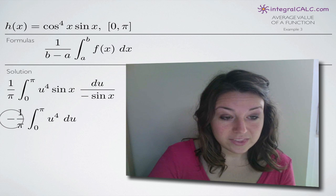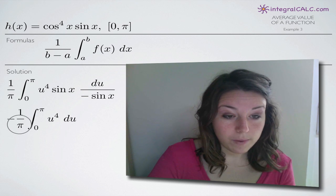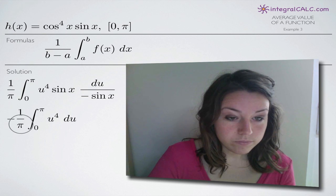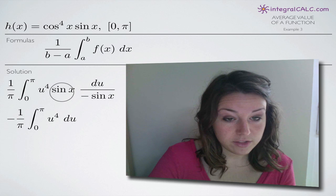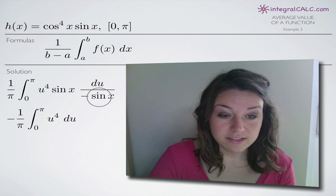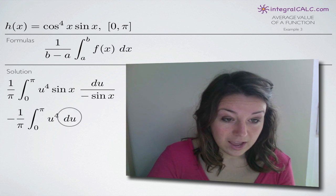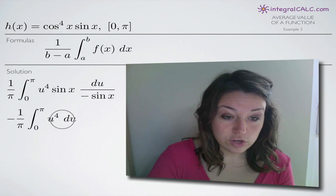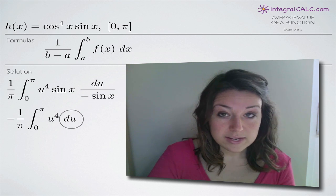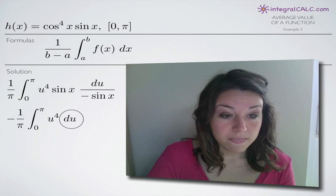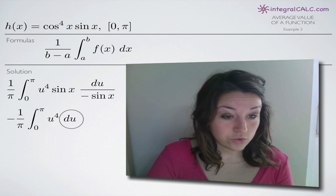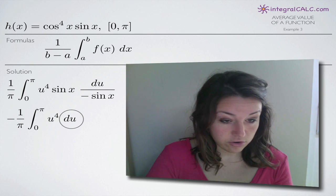We end up with negative one over pi, and then sin of x in the numerator and denominator cancels, leaving us with u to the fourth du in the integral, which is really easy to integrate.